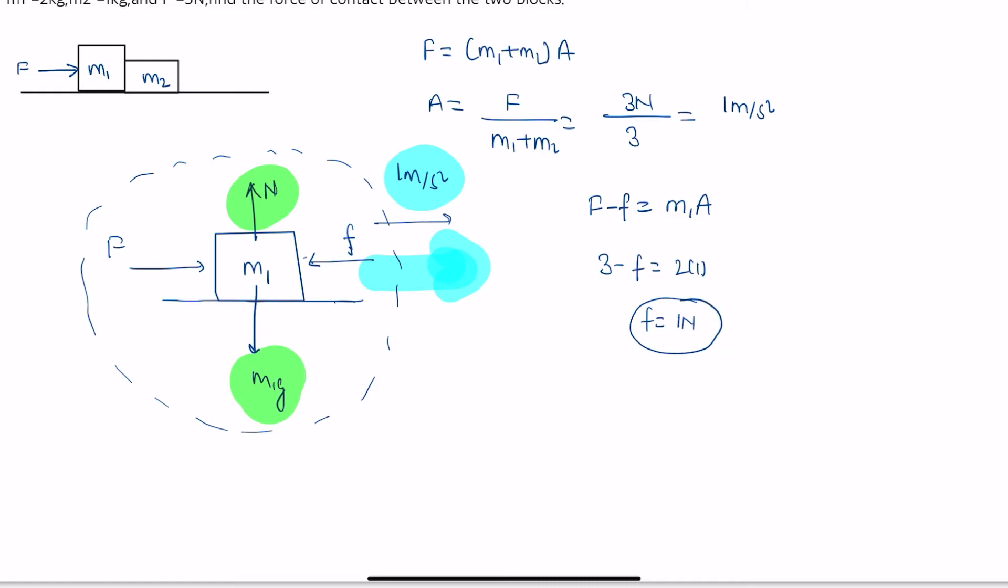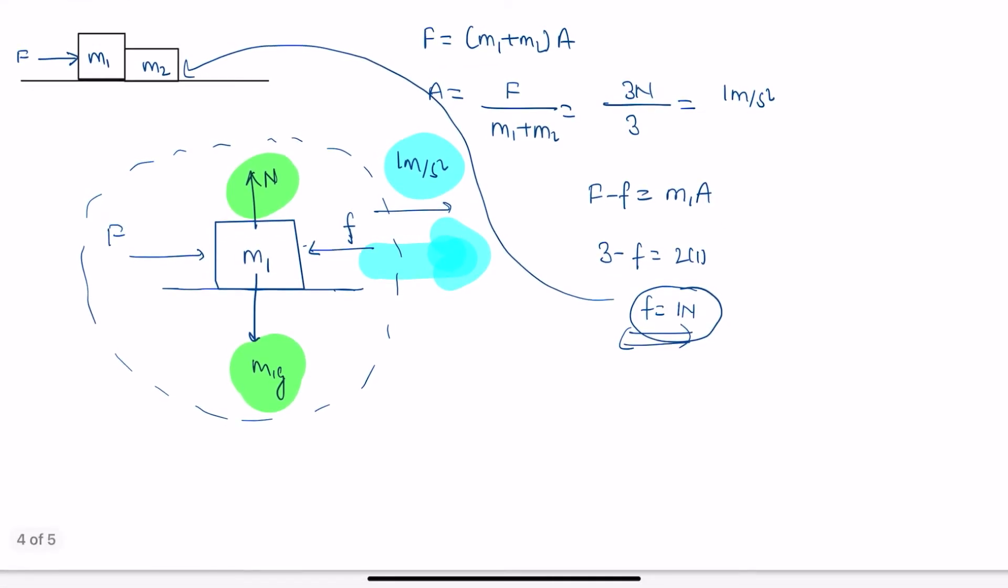Just check this fact. If contact force is 1 newton, just plug it in here. So I have my m2, this block. I have this m2 here and the only force that's acting on it is the contact force, and it's moving with acceleration a that equals 1 meter per second squared.